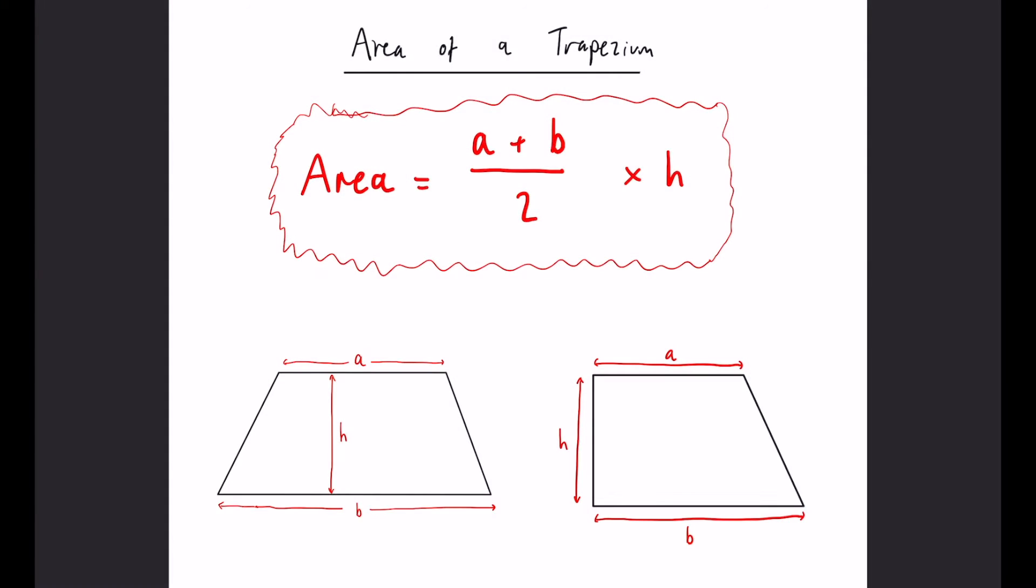In this video we're going to be looking at how to calculate the area of a trapezium. So you can see here in the big red writing the area of the trapezium is calculated by a plus b divided by 2 times by h, and below it we have labeling of the two different types of shapes this is going to work on.